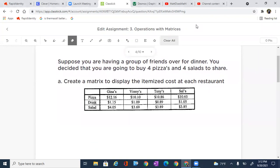It says, suppose you are having a group of friends over for dinner. You decided that you were going to buy four pizzas and four salads to share. Create a matrix to display the itemized cost at each of the restaurants.